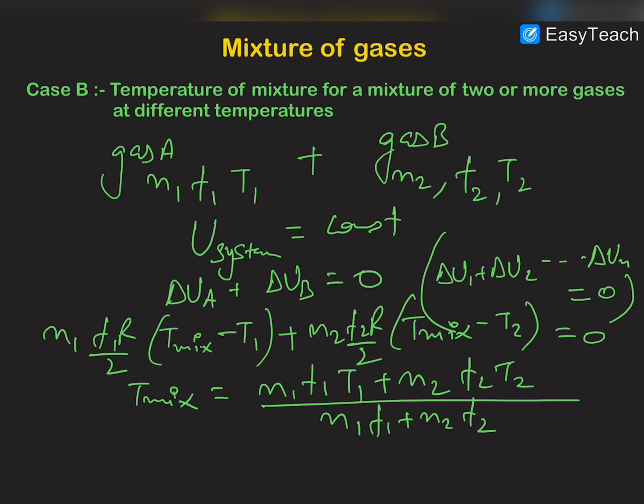The mixture temperature is T_mixture = (N1 F1 T1 + N2 F2 T2) / (N1 F1 + N2 F2). This is the formula for the temperature of the mixture when two gases are mixed at different temperatures. In the next video I will be bringing some more concepts of thermodynamics. Thank you.